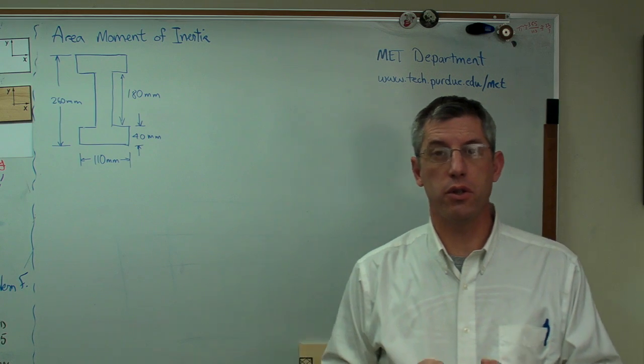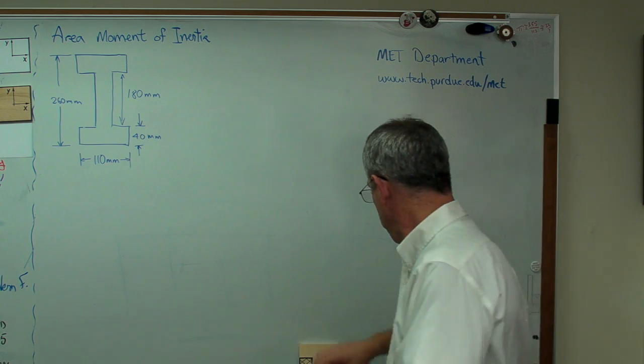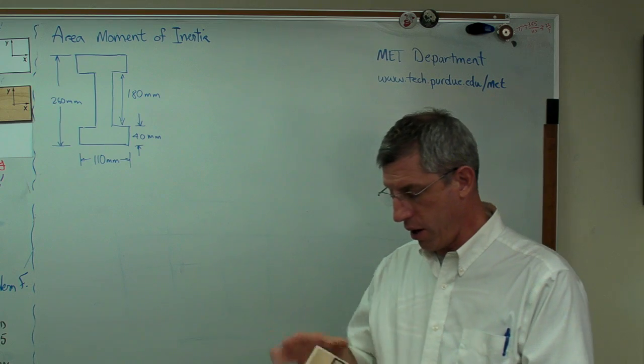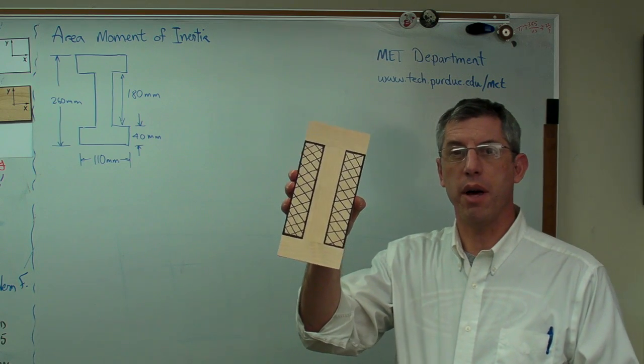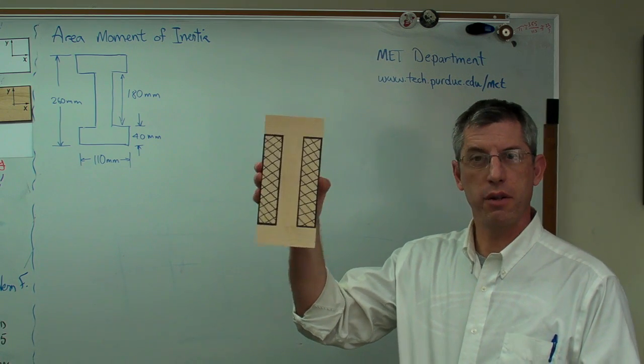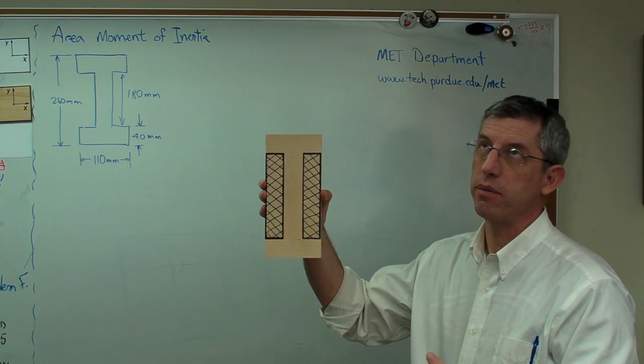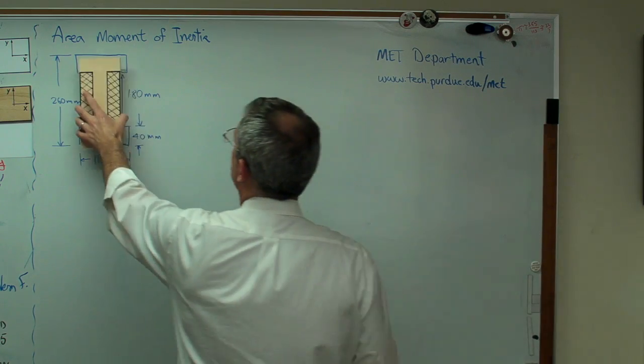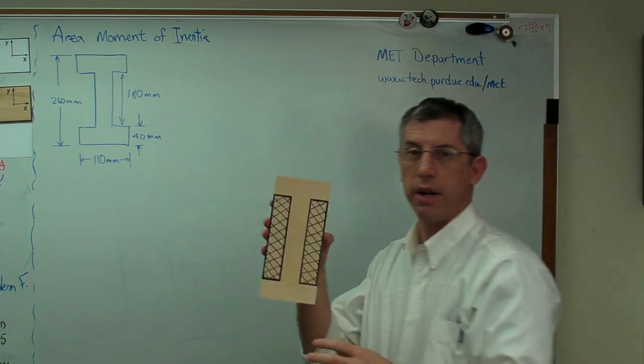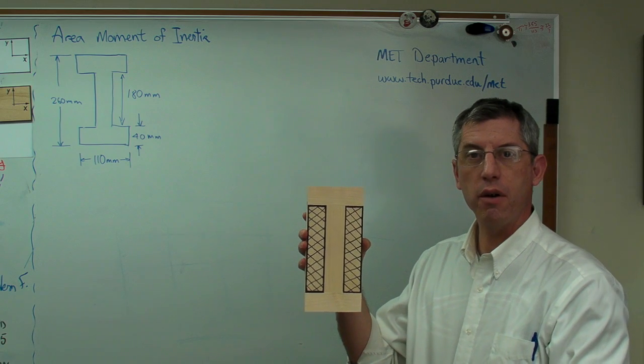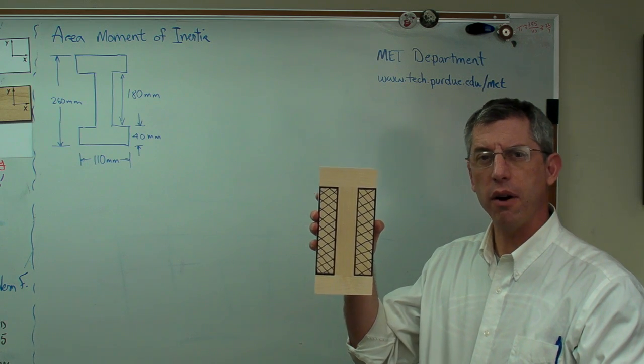Now I'm going to show you how to do this two different ways. The first way I'm calling a negative area method. I've made a little model here. Here's what the I-beam looks like. If you can imagine this, this is the rectangle out of which this I-beam might have been cut. So these areas I have checked off here, I'm going to call those negative areas.